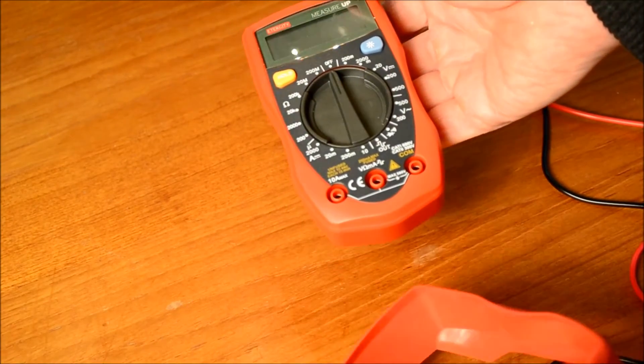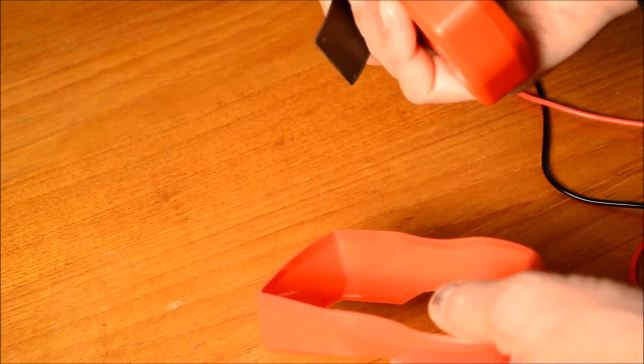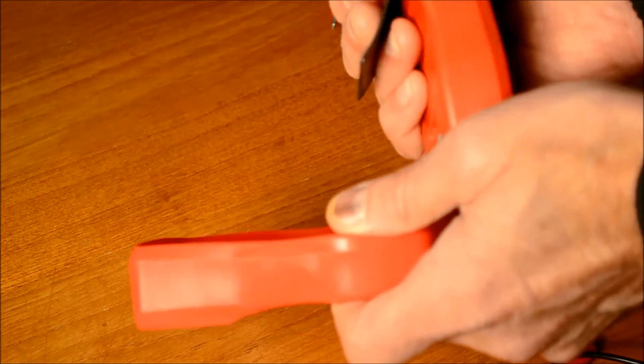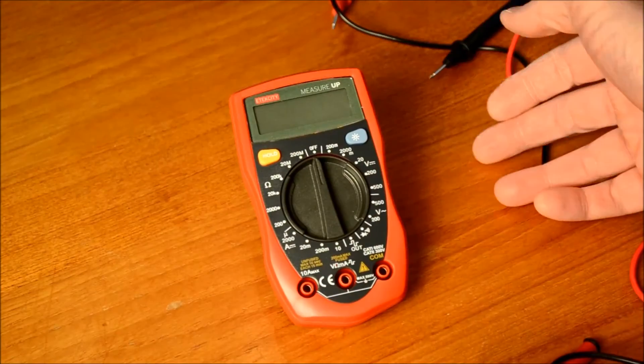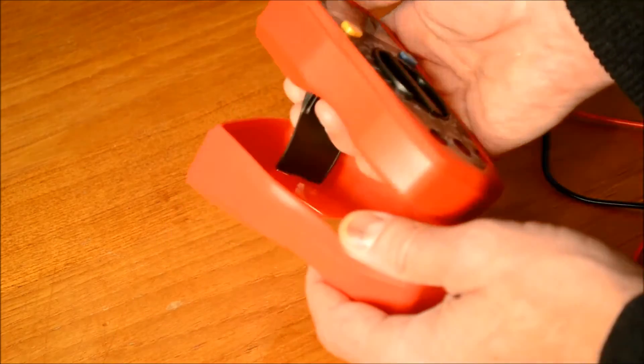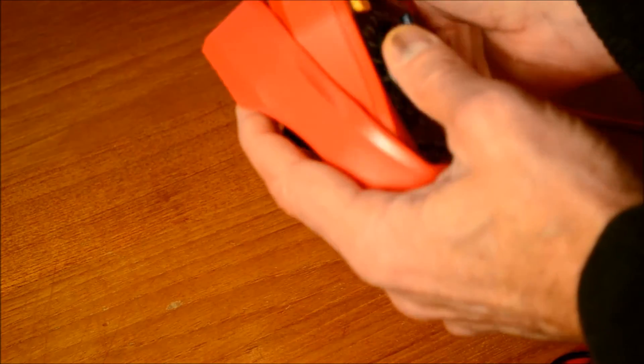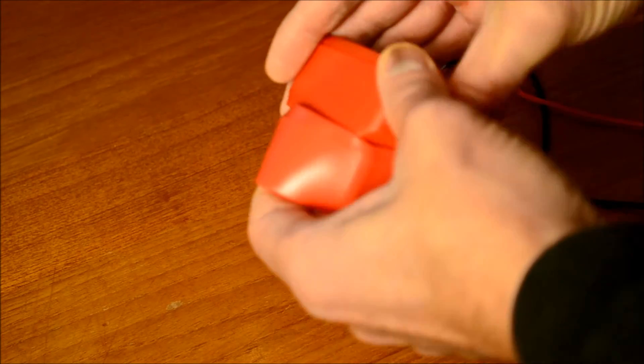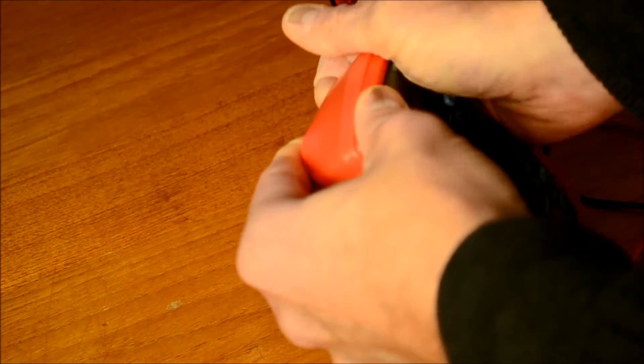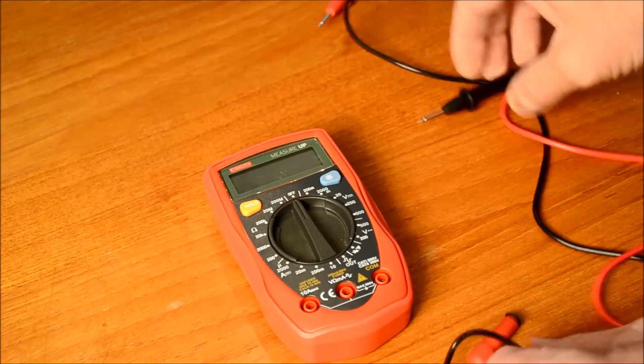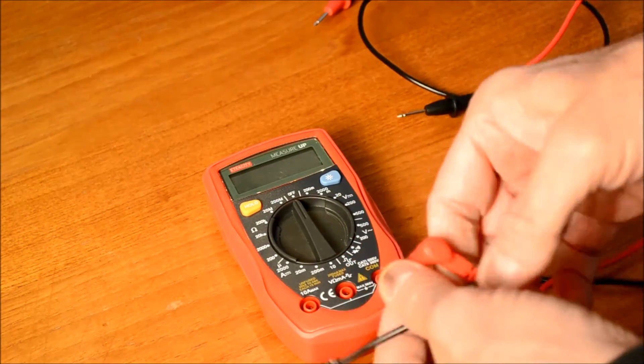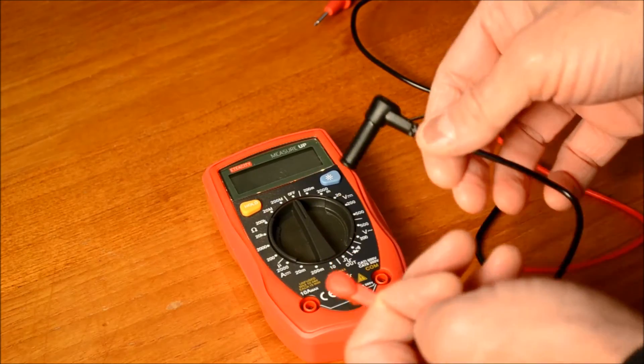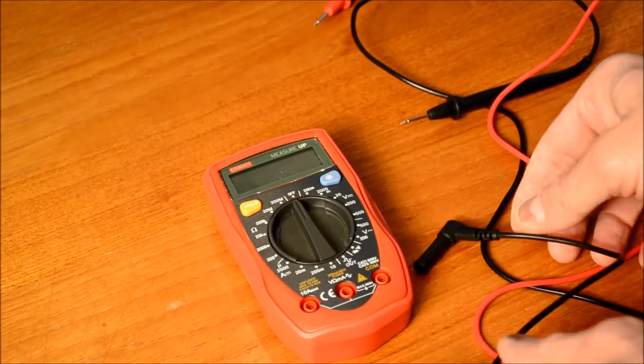So the digital multimeter from E-Tech City has a support stand that opens and closes in the back so you can stand it up nicely while you're using it. It also comes with this rubberized support that goes around it that helps protect it in case you drop it. And it comes with two leads, one for common, one for hot connections that you'll plug into the unit.